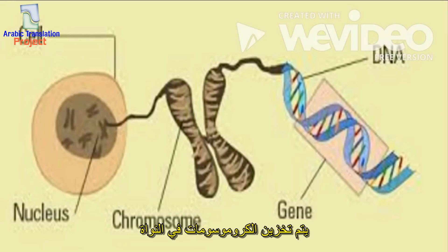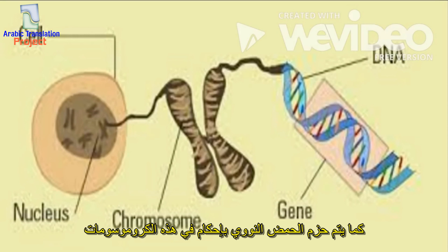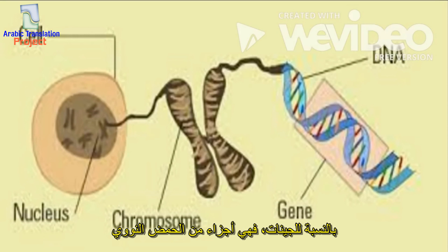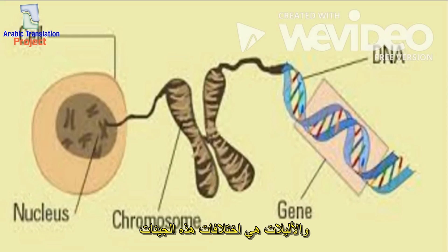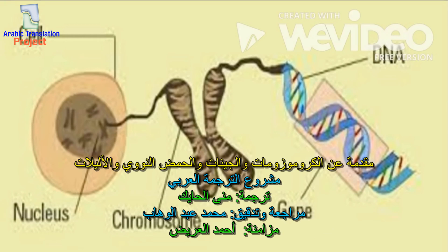So, chromosomes are stored in the cell nucleus. DNA is packaged tightly into these chromosomes. Genes are the sections of DNA, and alleles are the variations of these genes.